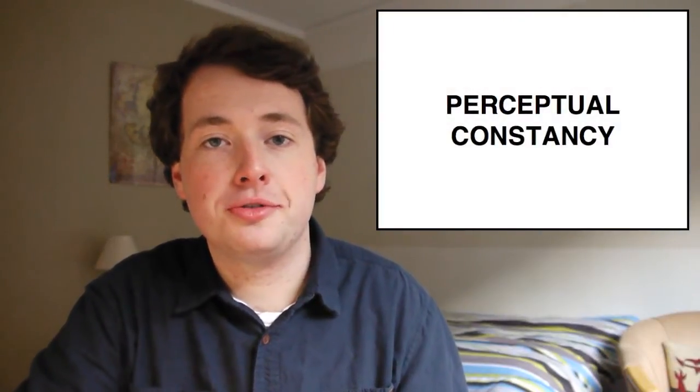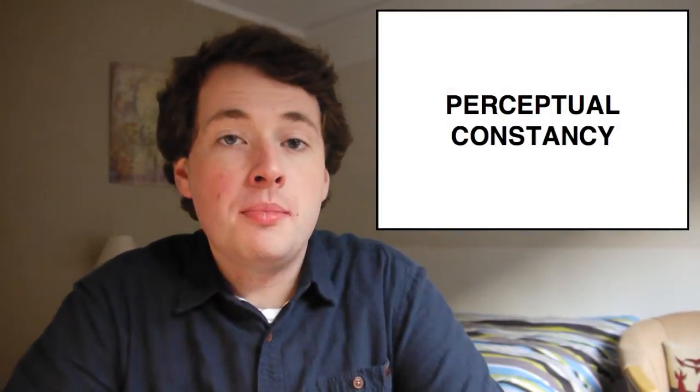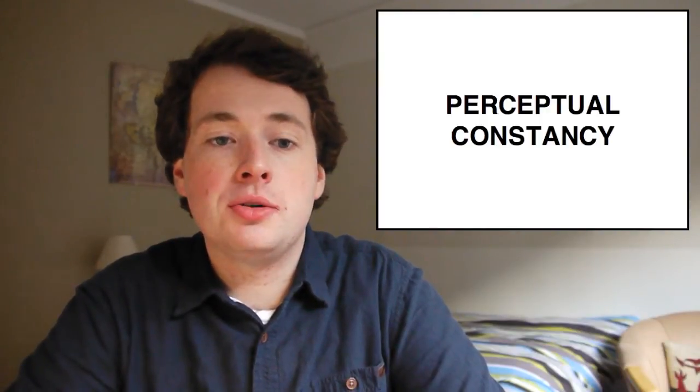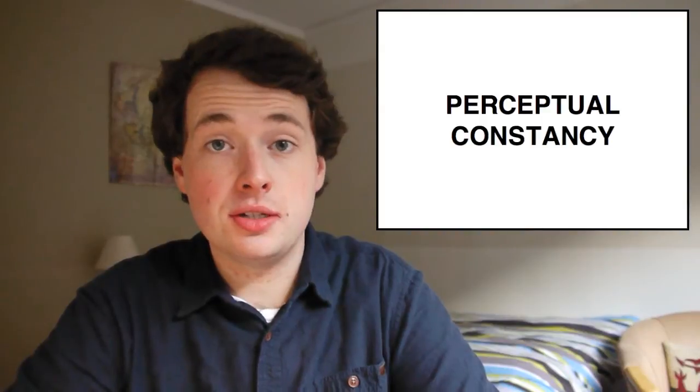In this video, I'm going to talk about the psychological phenomenon of perceptual constancy. Perceptual constancy is the name given to the visual system's mechanism that allows the brain to recognize objects regardless of lighting conditions, angles, and distances.